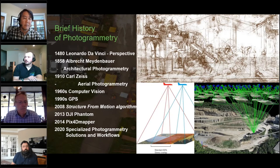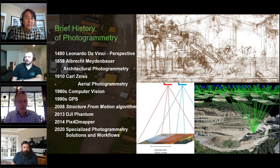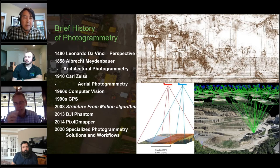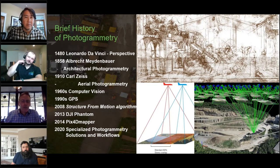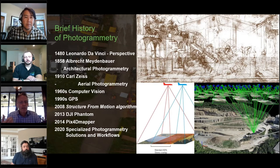In the 1990s the GPS system was launched, and suddenly you could get the location of your camera when you flew it in an aircraft. Up until about the early 2000s, things were done pretty manually — you'd take a photograph from two different locations with stereoscopic views, and if you knew the location and camera model you could measure things on the ground. It was still a very slow process.